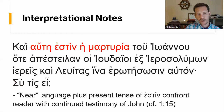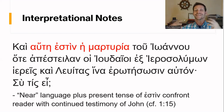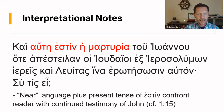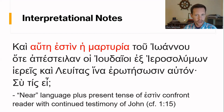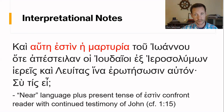Now a few interpretational notes. The near demonstrative hautē — 'this is the testimony of John' — combined with the present tense of estin creates an immediacy: it's almost like we're confronting the reader with John's continued testimony right here in front of us. Compare this with verse 15. This isn't merely a historical event — this is the testimony right now. And what we're going to find out next lesson is that the testimony is that John is not the Christ, and that one who comes after him is greater.